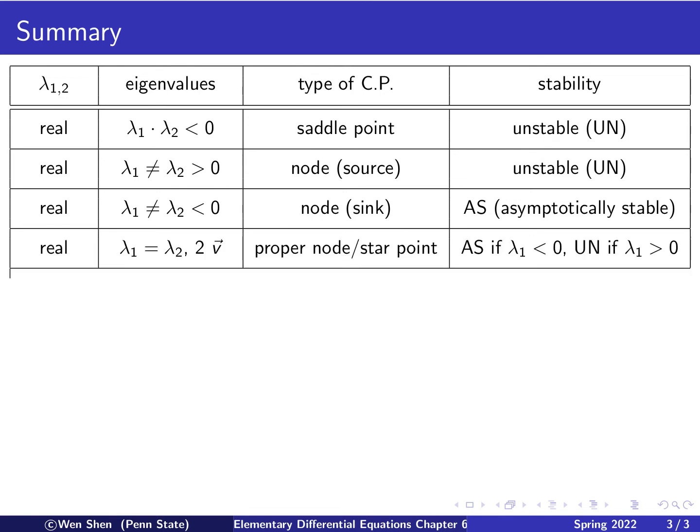The next one is real eigenvalues, but they are repeated. So λ₁ equals λ₂, and we can find two linearly independent eigenvectors. This is called a proper node, and it's also called a star point, and the stability will be asymptotically stable if the eigenvalues are negative and unstable if they are positive.